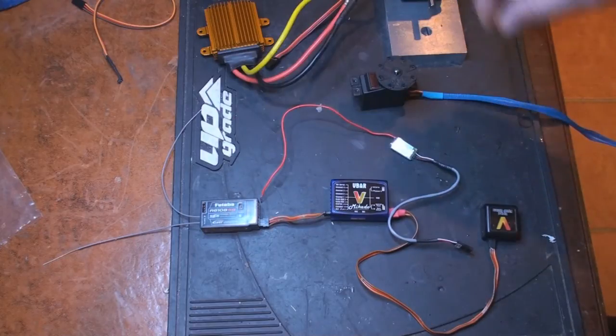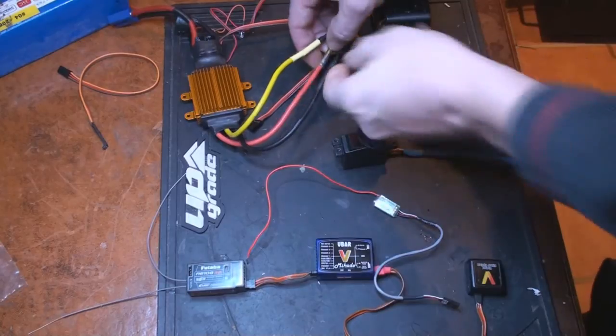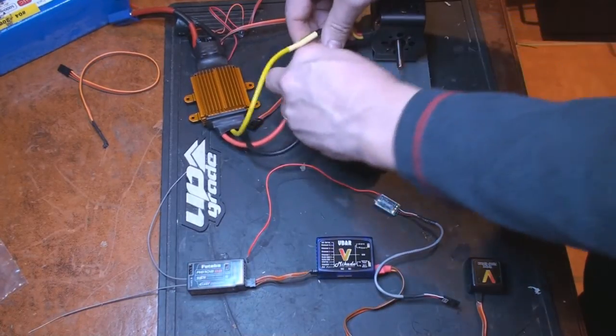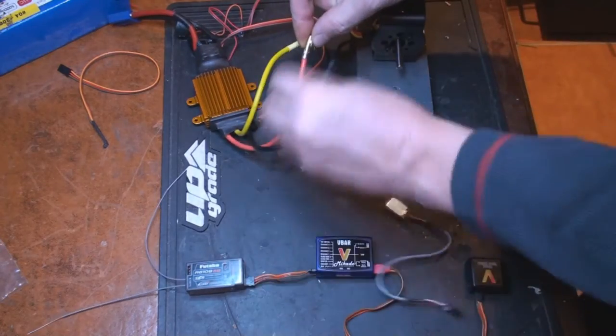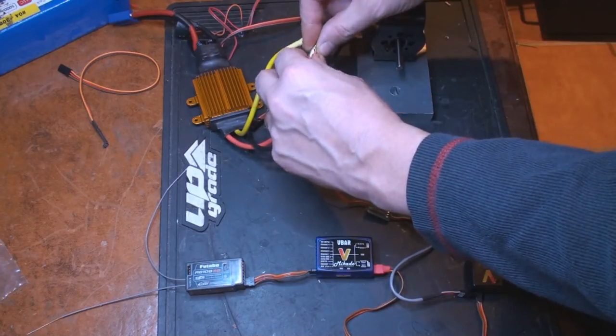What I do is take off the heat shrink on the female part, and then I solder the connector on the outside here, and then I put on new heat shrink on everything so it's connected in a good way.